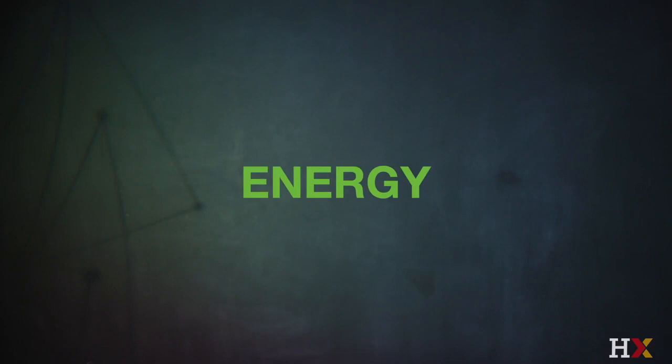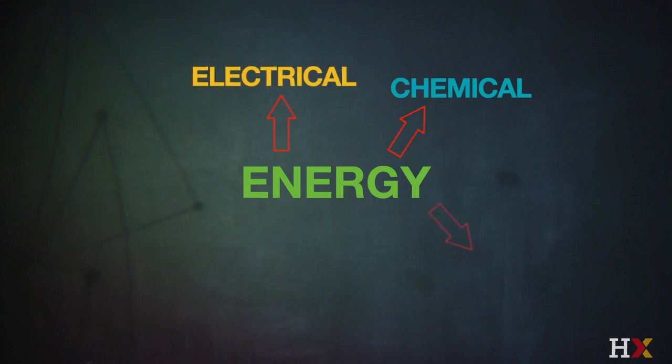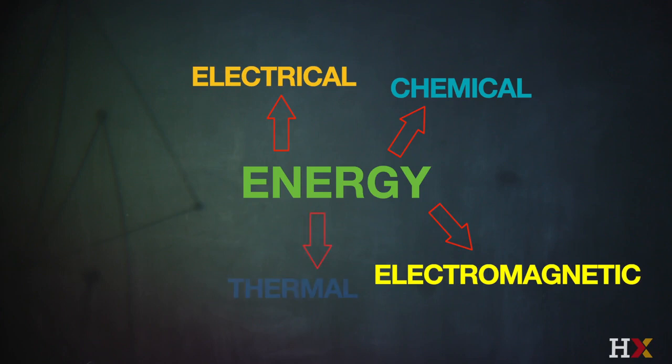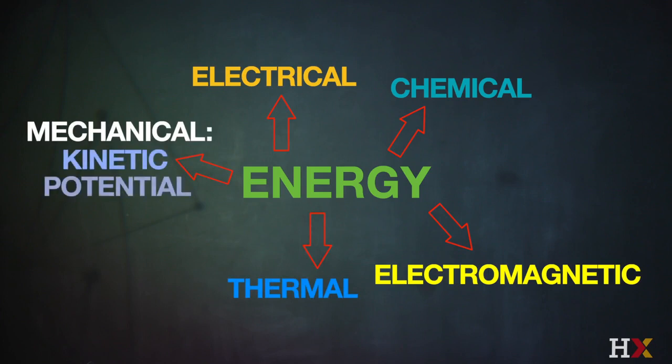And if we take the idea of energy here and we look at the categories that comprise energy, we know a number of them. There's chemical energy derived from chemical reactions. There's electrical energy. There's electromagnetic energy. There's thermal energy from the motion of molecules. There's mechanical energy in the form of kinetic energy and potential energy. And then finally, there's nuclear energy — the energy released from nuclear reactions. But these are all categories of energy. And nature, remarkably, interchanges energy amongst and between these categories seamlessly with profound accuracy, in that the total amount of energy in the universe remains constant.